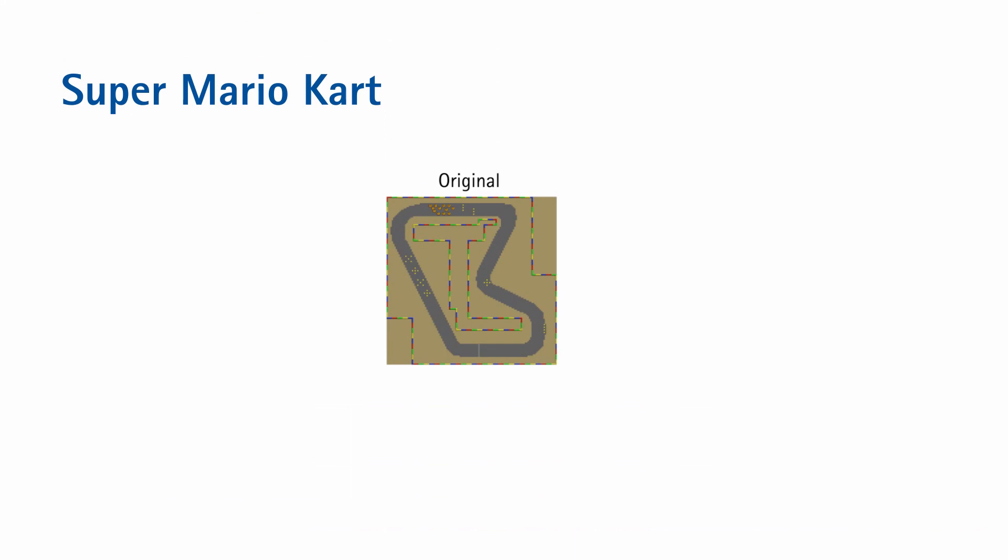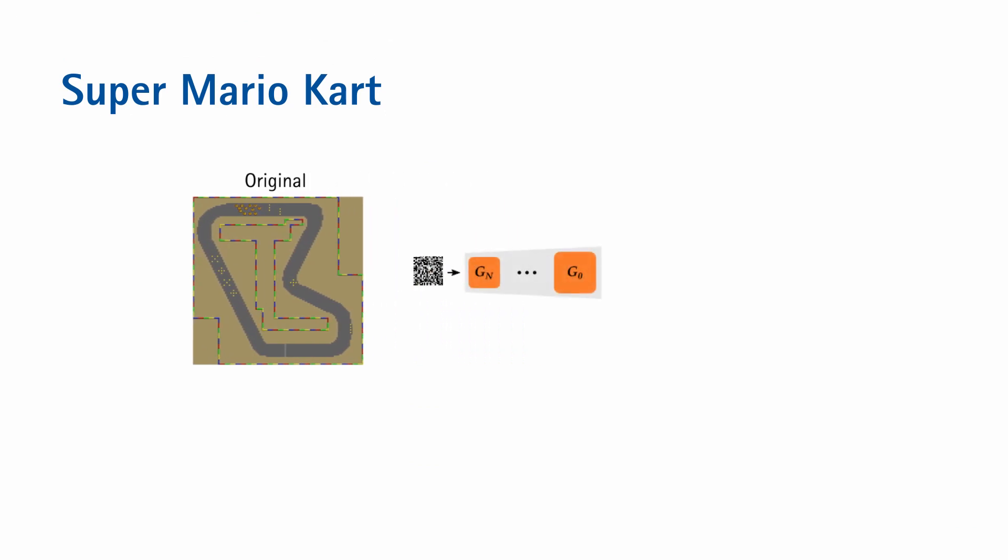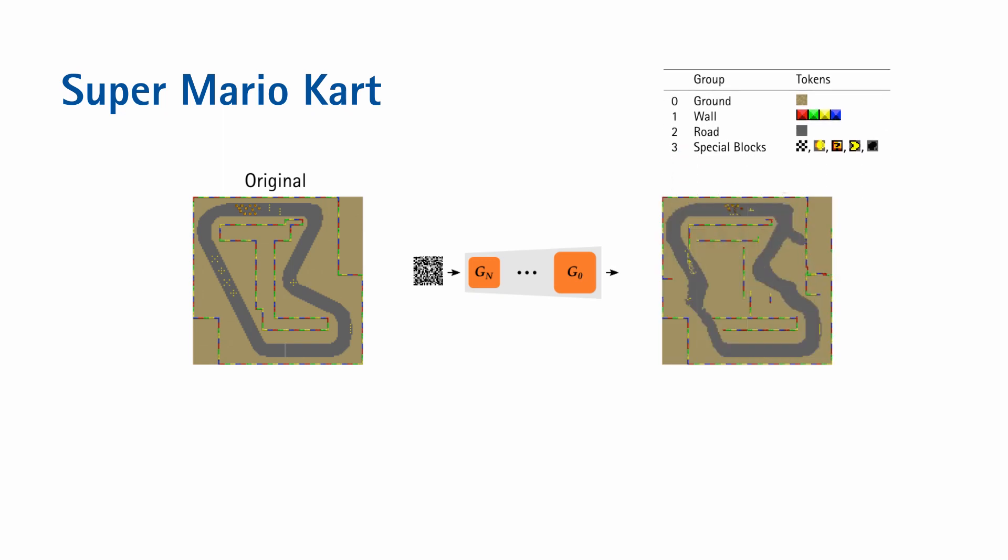We've shown that TOAD-GAN is capable of generating pleasing Super Mario Bros levels, but what about other games? Let's take Super Mario Kart as an example. We can train a TOAD-GAN on the new level simply after making a new token hierarchy, since nothing else in the algorithm is game specific.